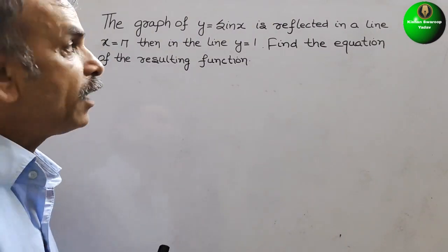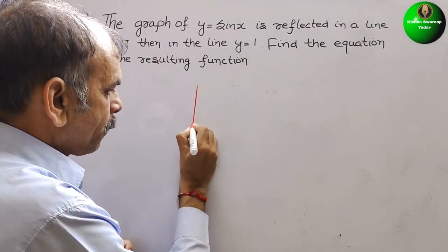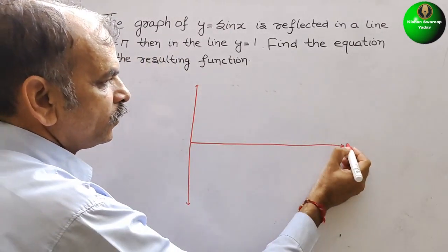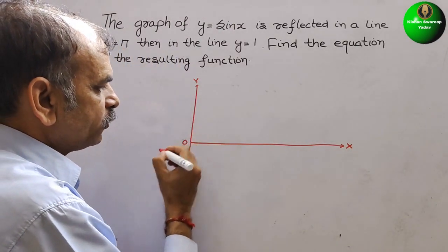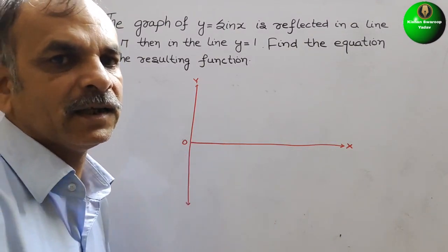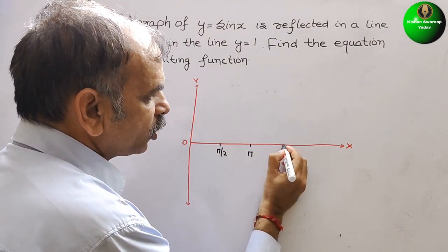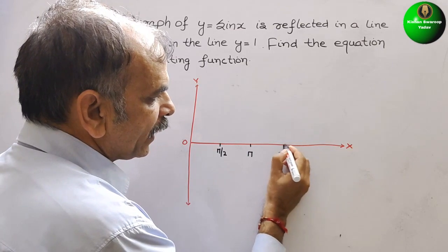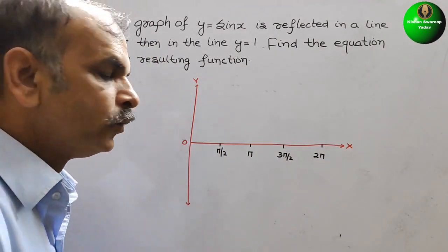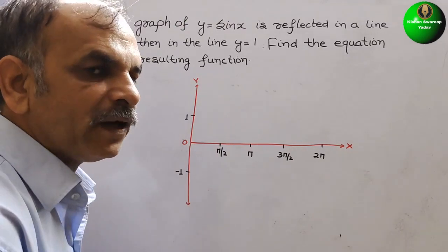First we will draw a graph of y equals sin x. So this is the y-axis and this is the x-axis. On the x-axis we are keeping radians: pi by 2, pi, 3 pi by 2, and 2 pi. On the y-axis we have the amplitude, so here it is 1 and here it is minus 1. We know that sin varies from 1 to minus 1.